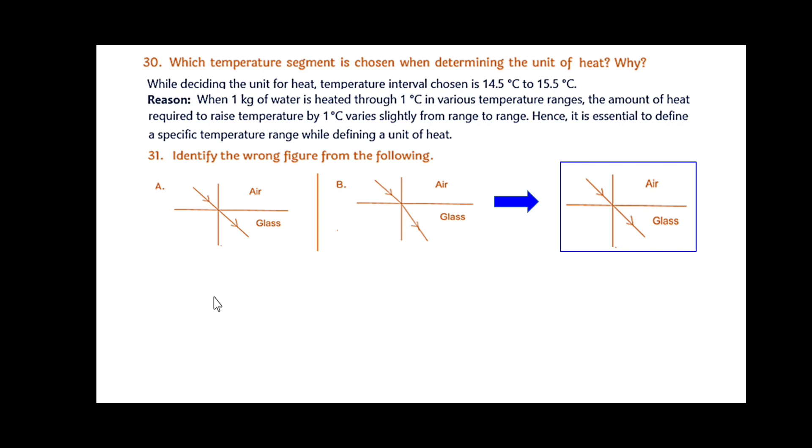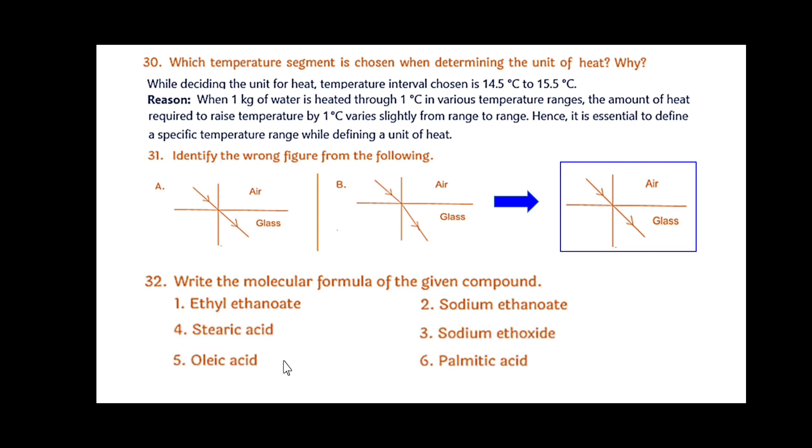Write the molecular formula of the given compounds. Here some compounds are given and we have to write their molecular formulas. Ethyl ethanoate C4H8O2, sodium ethanoate C2H3O2Na, stearic acid C17H35COOH or C18H38O2, sodium ethoxide C2H5ONa, oleic acid C17H33COOH or C18H34O2, palmitic acid C15H31COOH or C16H32O2.